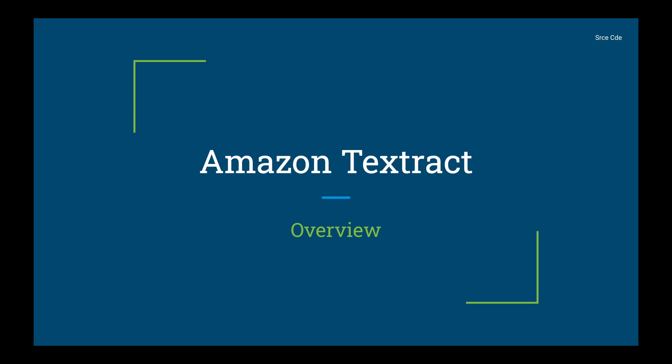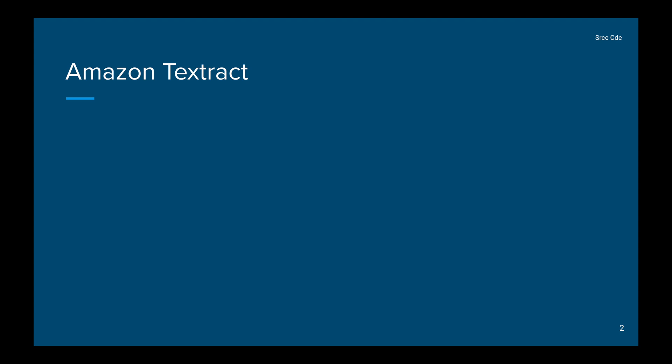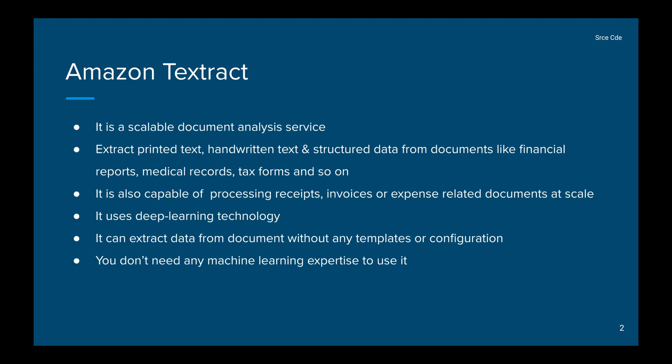Let's try to understand what exactly Amazon Textract is and what it is capable of. Basically, Amazon Textract is a scalable document analysis service that can extract printed text, handwritten text, and structured data from scanned images, any images, or PDF documents. It is also capable of processing expense-related documents like receipts and invoices at scale. Textract uses deep learning technology in the backend to detect and extract information, and it is trained on millions of documents so it can process any type of document efficiently without any explicit need for templates or configuration.